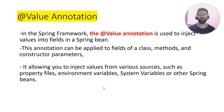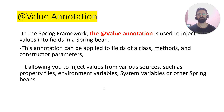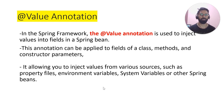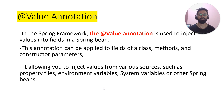In live projects, we mostly use the @Value annotation to set the value of a property of a Spring bean through the property file. We set the key-value pairs into the properties file and then use @Value to set those values to the properties of a Spring bean. This annotation can be applied to the field of a class, to a method, and to constructor parameters, allowing you to inject values from various sources like property files, environment variables, system variables, and other Spring beans.